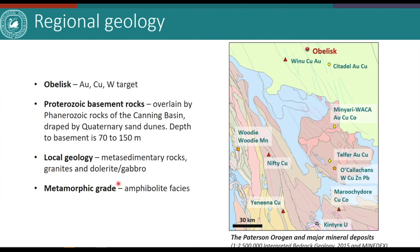Obelisk is a gold-copper-tungsten target. It is hosted by metamorphosed Proterozoic basement rocks, which are overlain by Phanerozoic rocks of the Canning Basin. These basin sediments are draped by Quaternary sand dunes, and the depth to metamorphosed basement is 70 to 150 metres in the Obelisk area. The local geology, interpreted from geophysical data, includes metasedimentary rocks, granites, dolerite, and gabbros. The metamorphic grade of the rocks at Obelisk is amphibolite facies.